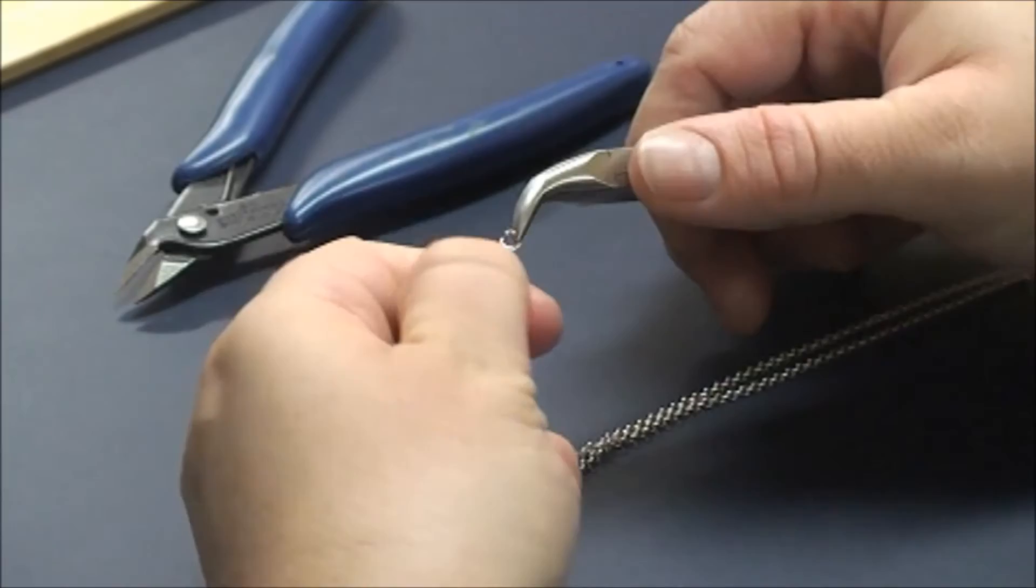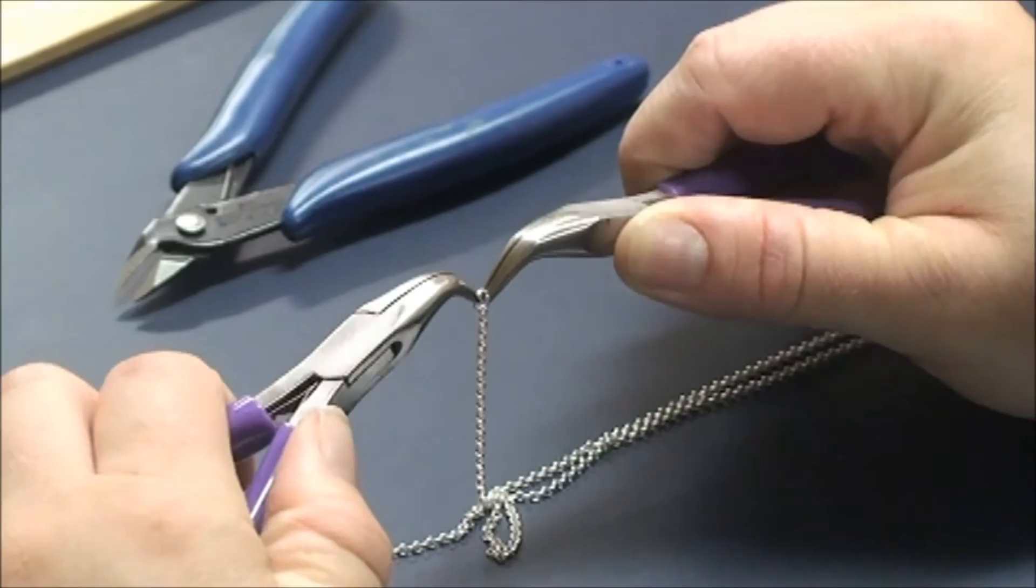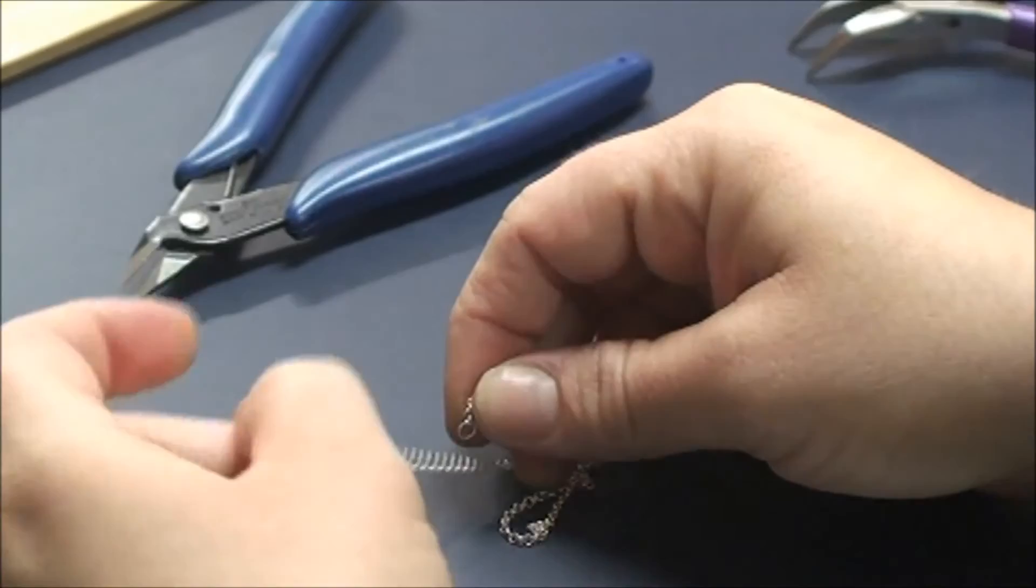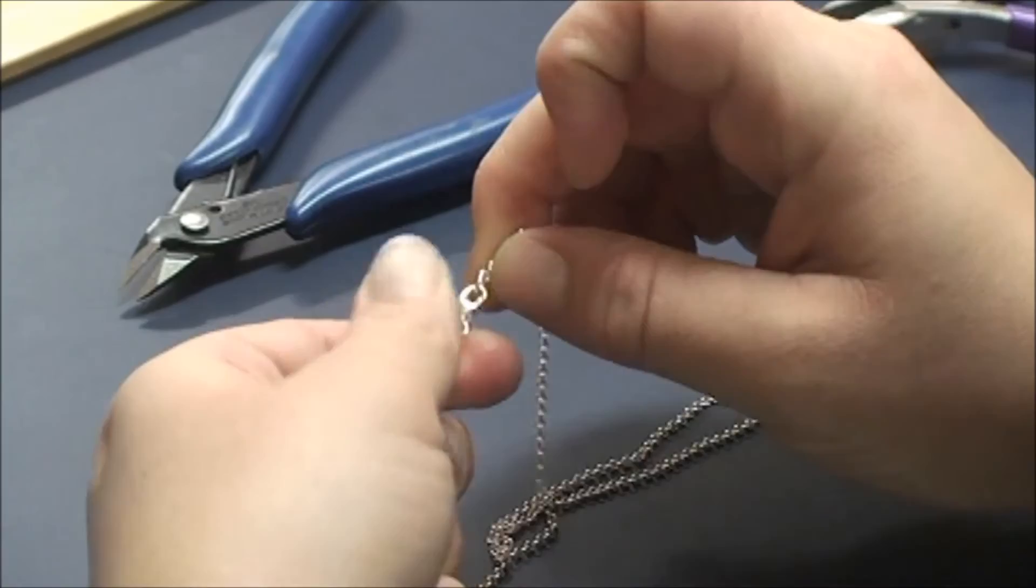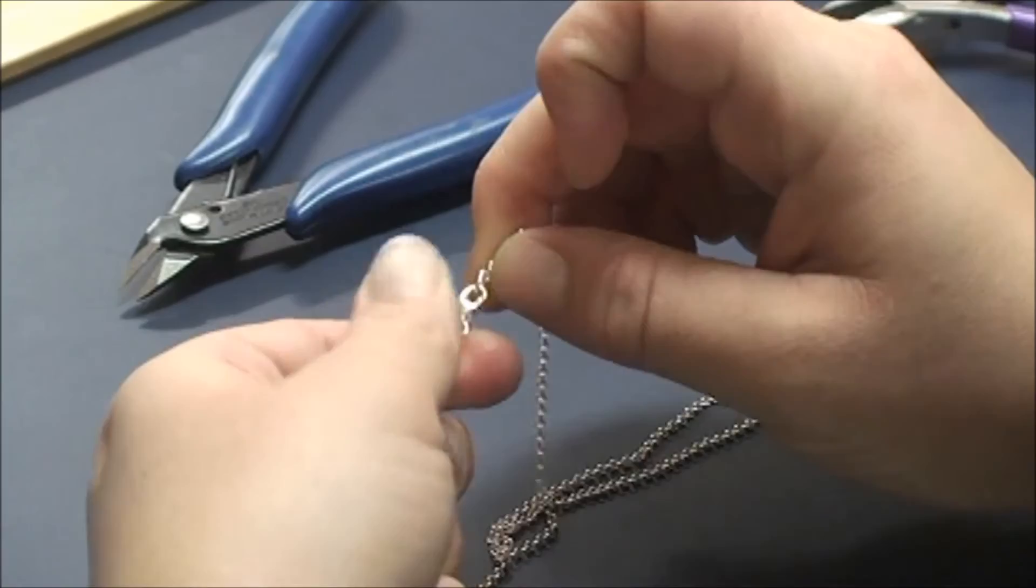So I'm just taking my 4mm jump ring, putting it through the end link there, and then close it up, and again double check, make sure that it's nice and secure, and you connect it to your lobster clasp, and here you have a sterling silver 2mm rolo chain necklace.